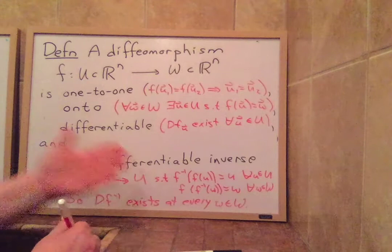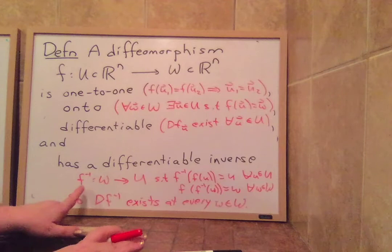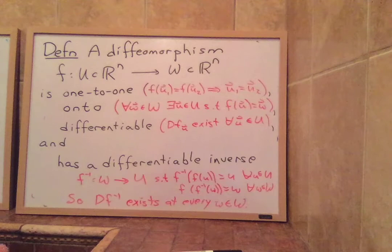At least we can figure out this inverse, maybe. Often you can't find the inverse. But the inverse has a derivative. Sometimes you can prove something as a diffeomorphism without actually being able to find the inverse. But let's look at the particular function you all know very well and talk about how it makes diffeomorphisms sometimes.